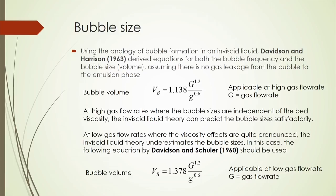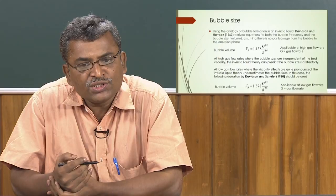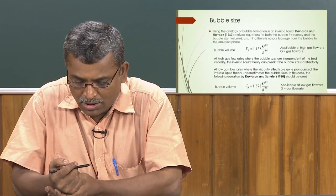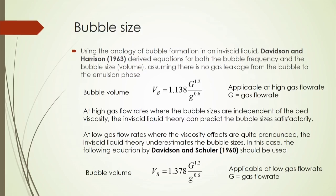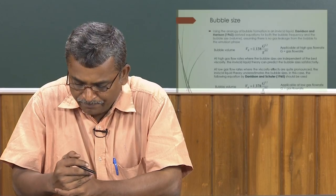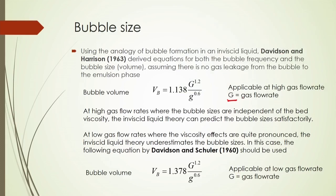Using the analogy of bubble formation in an inviscid liquid, Davidson and Harrison (1963) derived equations for bubble frequency and bubble size (volume), assuming no gas leakage from the bubble to the emulsion phase. The bubble volume can be calculated from the gas flow rate G. At high gas flow rates, the bubble volume VB = 1.138 × G^1.2 / g^0.6.